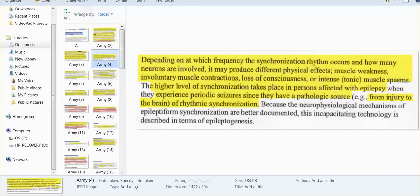The use of non-lethal technology. Depending on which frequency the synchronization rhythm occurs and how many neurons are involved, it may produce different physical effects, muscle weakness, involuntary muscle contractions, loss of consciousness, or intense muscle spasms. Higher level of synchronization takes place in persons affected with epilepsy. They experience periodic seizures due to an injury in the brain, due to the rhythmic synchronization disruption.